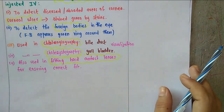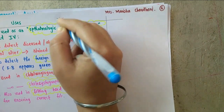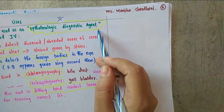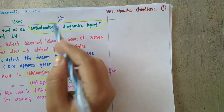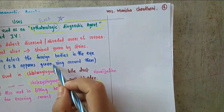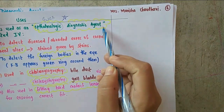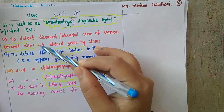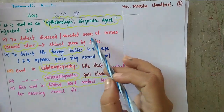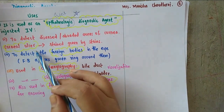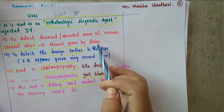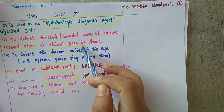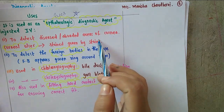The next diagnostic agent is fluorescein sodium, very well known as an ophthalmologic diagnostic agent — dealing with eye problems. When injected intravenously, it is used to detect the abraded or diseased areas of the cornea, as in corneal ulcers. The stain goes into the abraded areas of the cornea and stains them green, so the ulcers or abraded areas get detected.